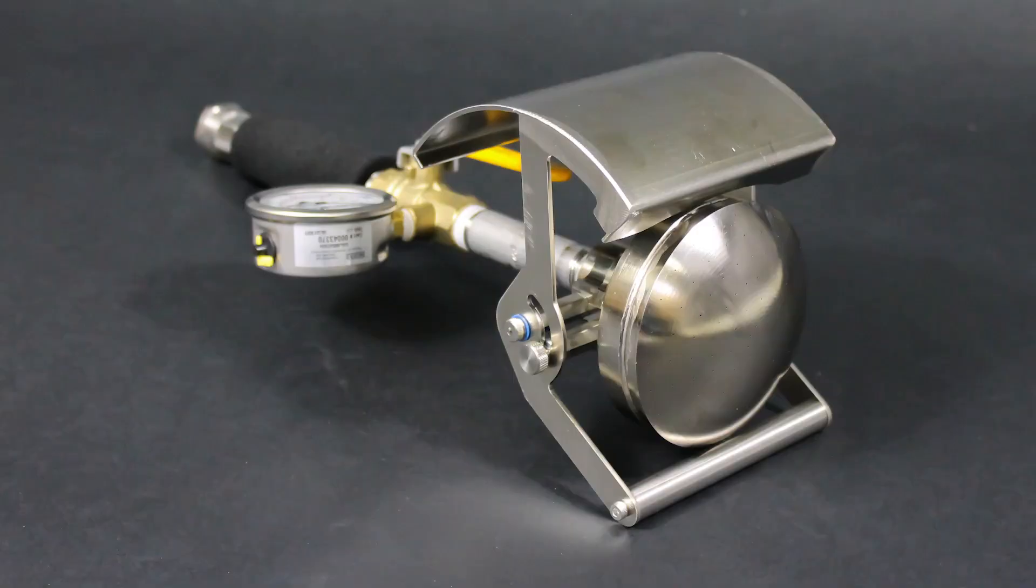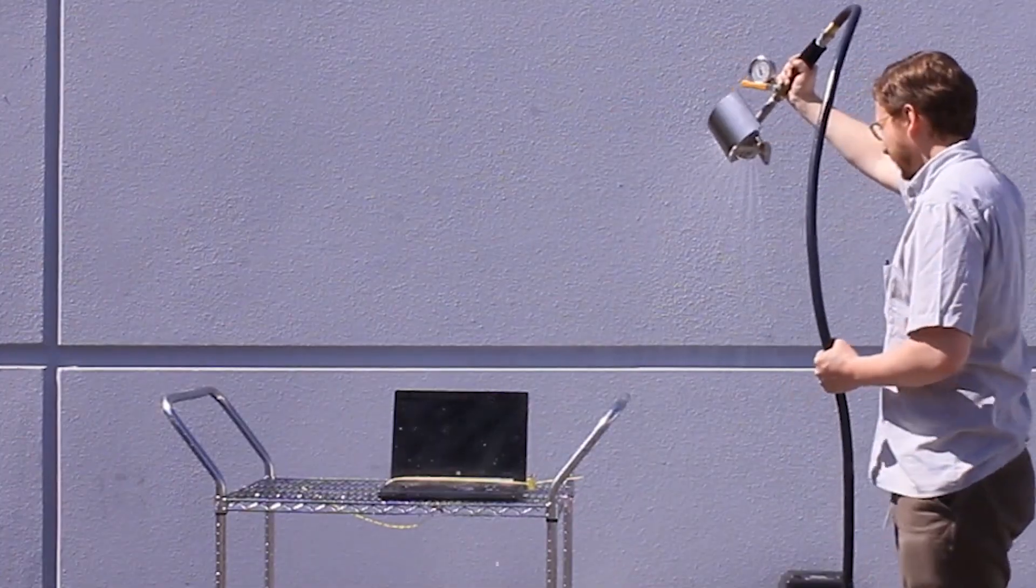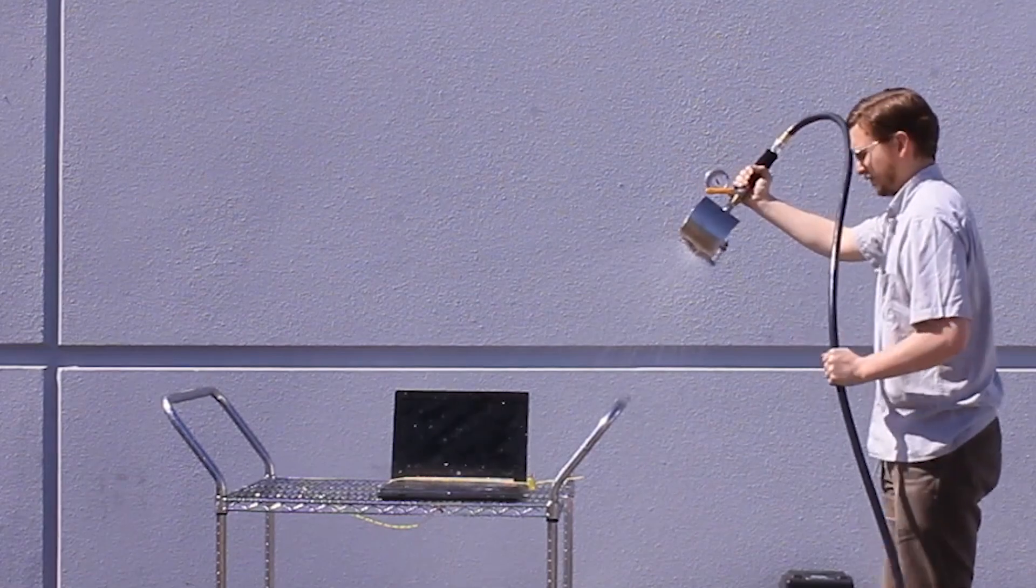The shower head type nozzle allows us to test to a standard called IEC 60529 levels three and four, and that specific nozzle allows us to simulate rainfall at vertical or near vertical orientations.